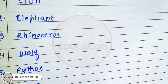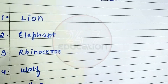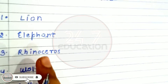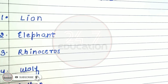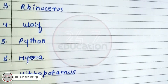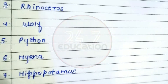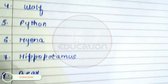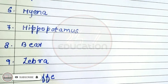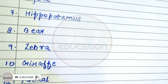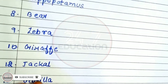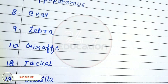Let's revise these. First, lion. Second, elephant. Third, rhinoceros. Fourth, wolf. Fifth, python. Sixth, hyena. Seventh, hippopotamus. Eighth, bear. Ninth, zebra. Tenth, giraffe. Twelfth, jackal. And thirteenth, gorilla.